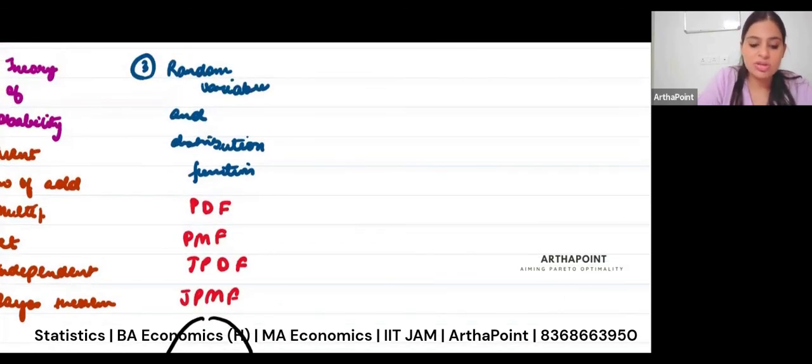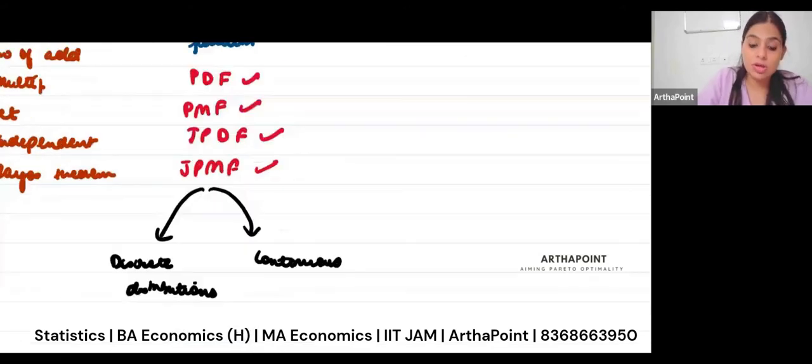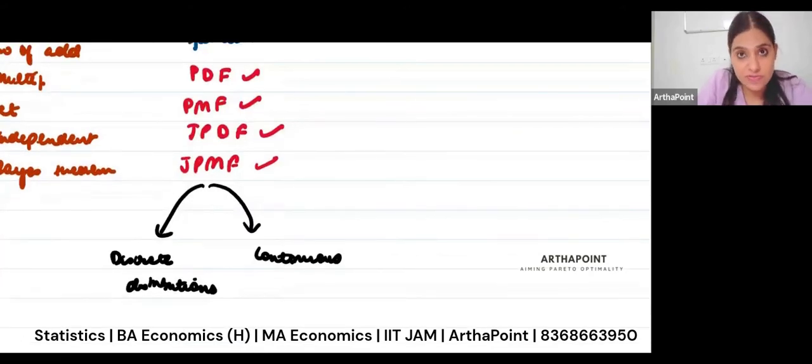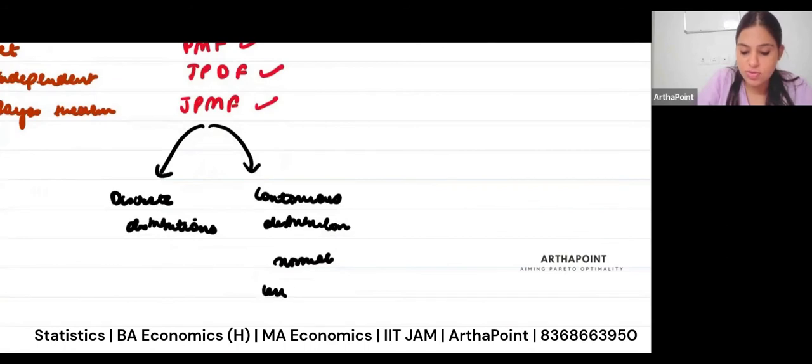One is talking about these basic functions PDF, PMF, JPDF, JPMF. And then we will be talking about discrete and continuous functions. So, for example, this will cover what is a normal distribution. What is a uniform distribution? That all part.